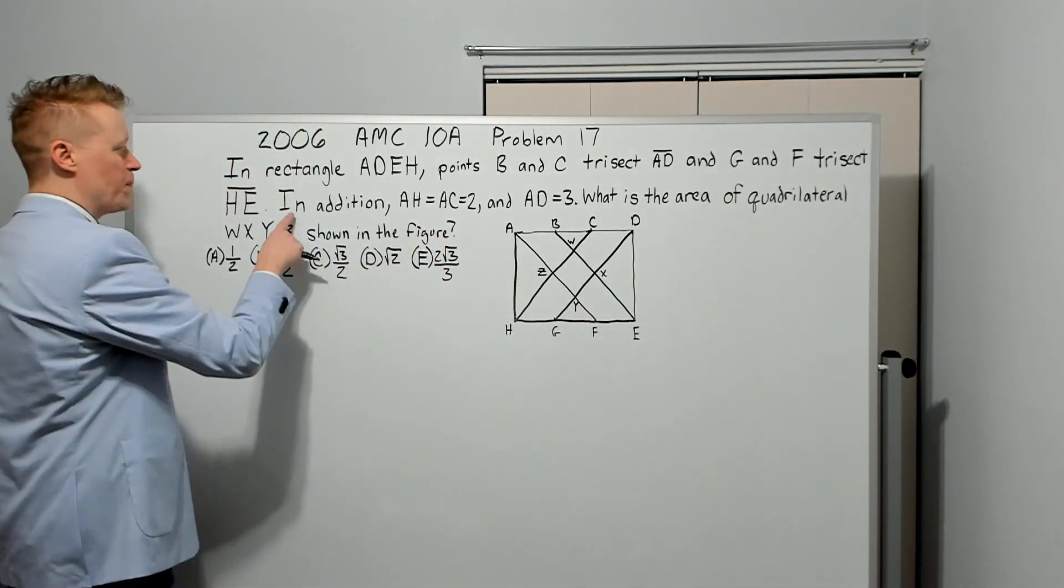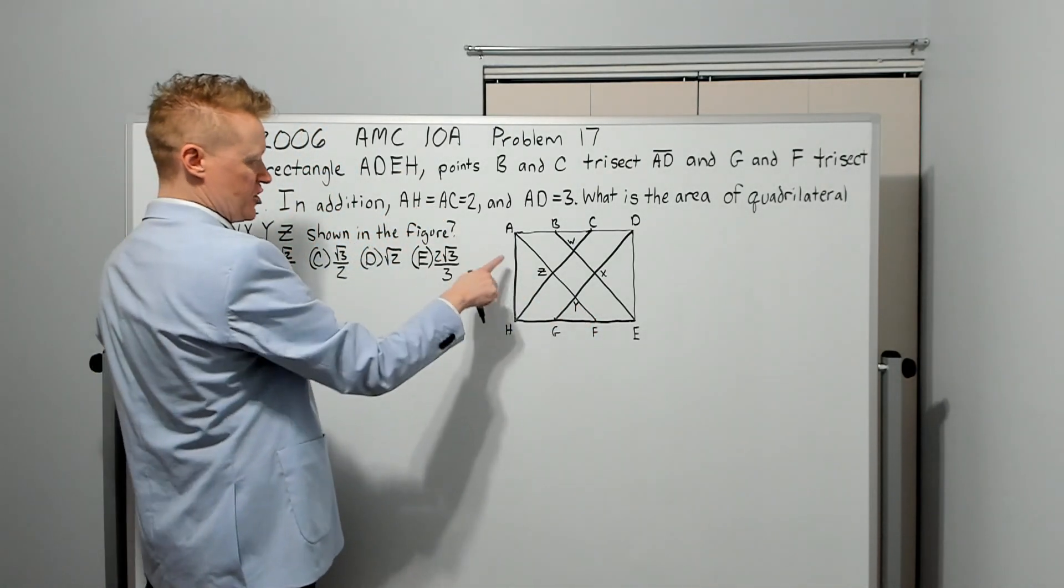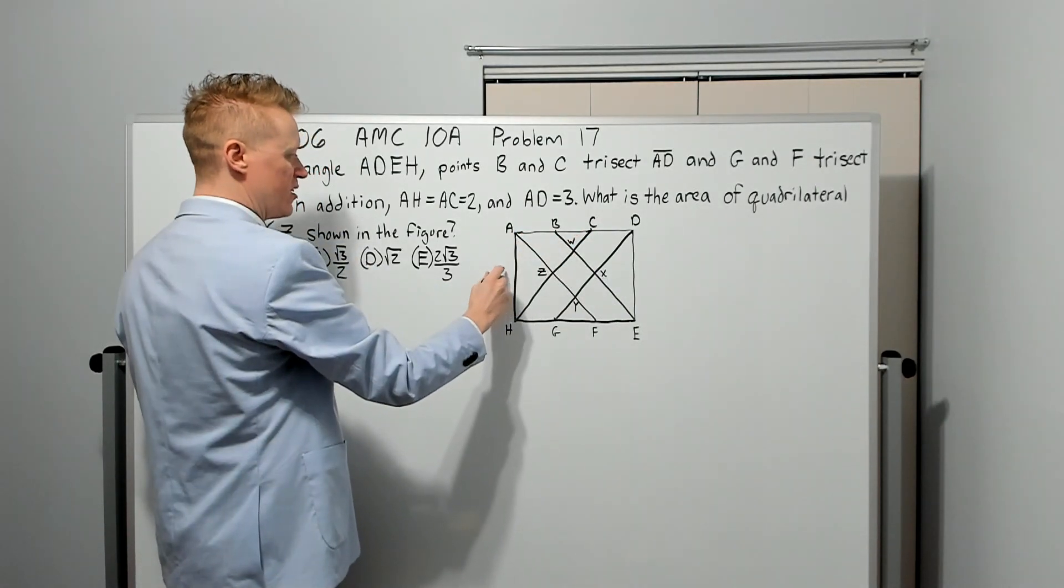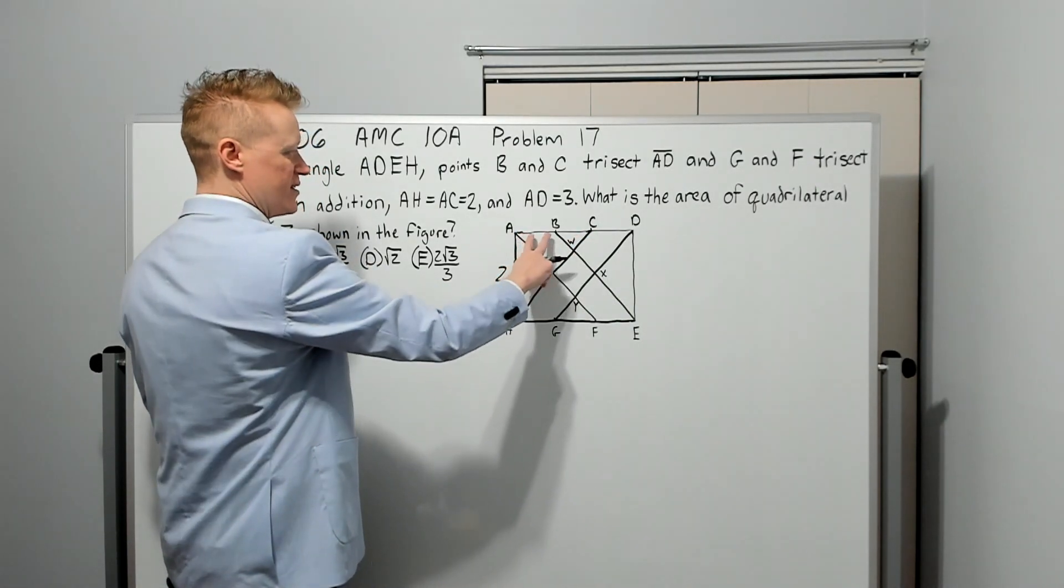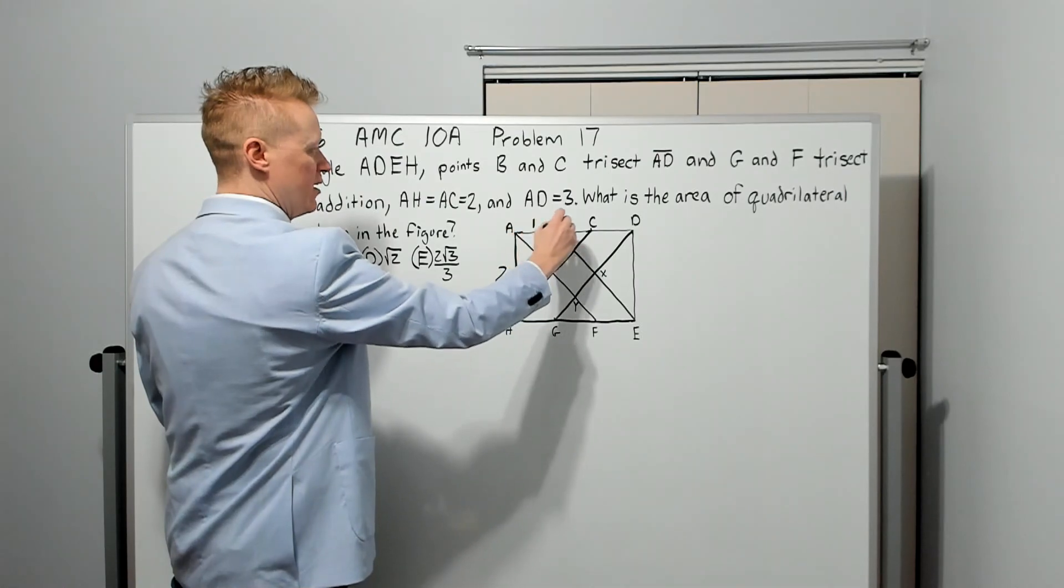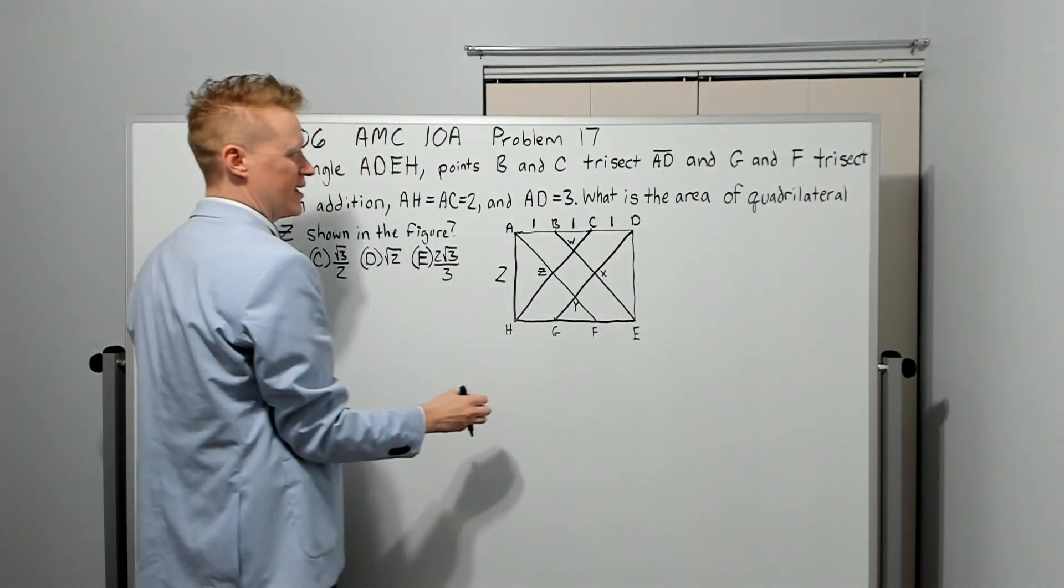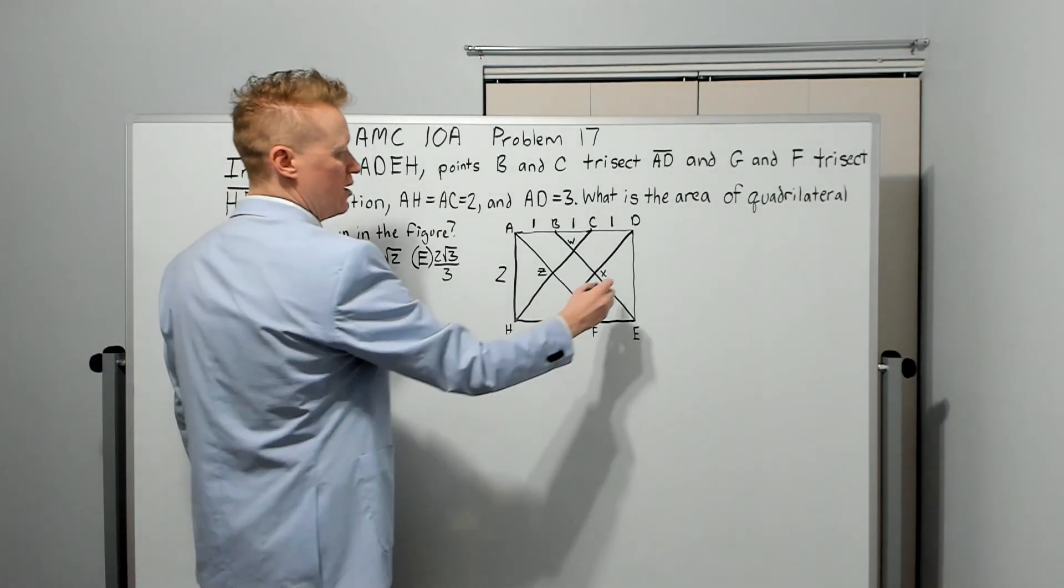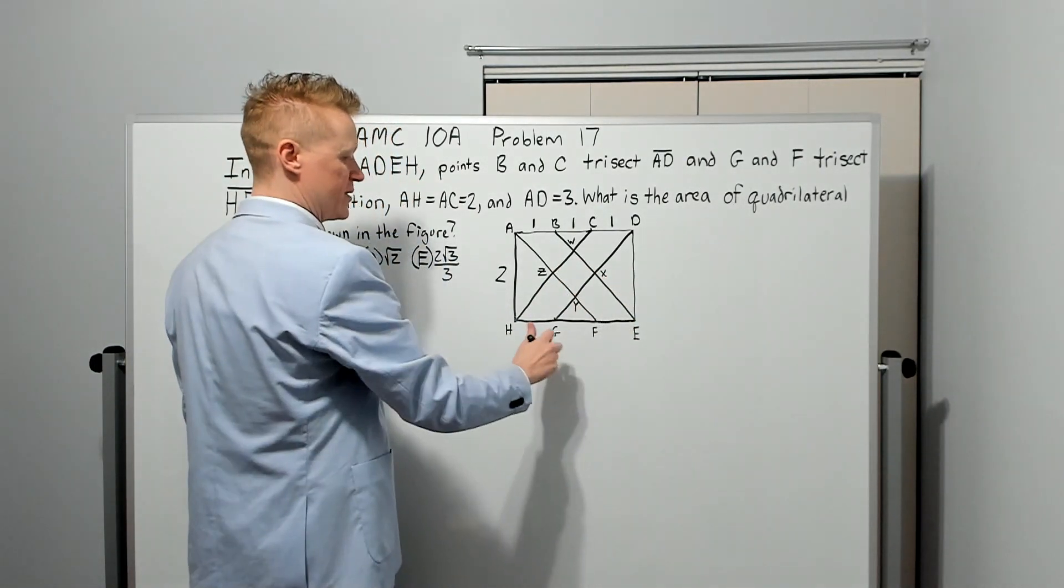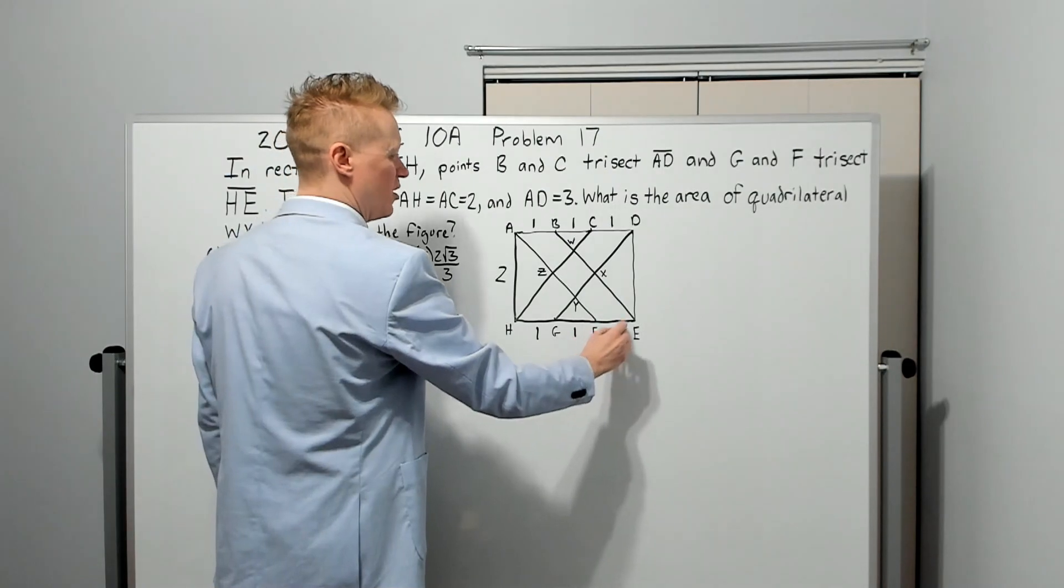In addition, AH equals AC equals two. Since this and this are equal, we know these must each be one. It's trisected. This is one, and since it's a rectangle, the opposite side is three. These are all one also, and this must be two.